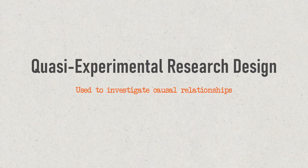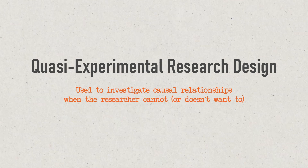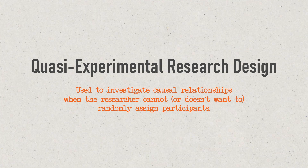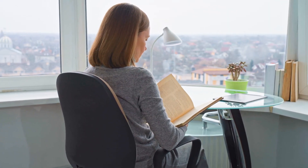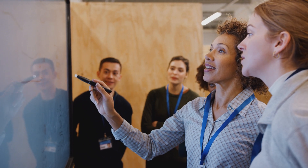Last but not least, we've got quasi-experimental research. This type of design is used when the research aims involve investigating causal relationships, but the researcher cannot or does not want to randomly assign participants to different groups — whether for practical or ethical reasons. Instead, with a quasi-experimental design, the researcher relies on existing groups or pre-existing conditions to form groups for comparison. For example, if you are studying the effects of a new teaching method on student achievement in a school district, you might not be able to randomly assign students to different classes. In that case, you'd choose classes or schools that already use different teaching methods to achieve separate groups without assigning participants yourself.